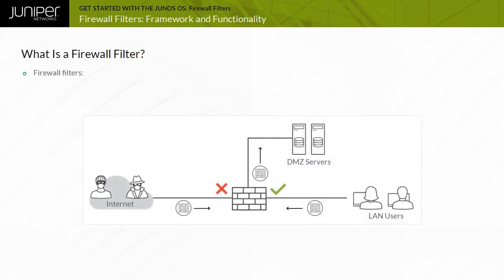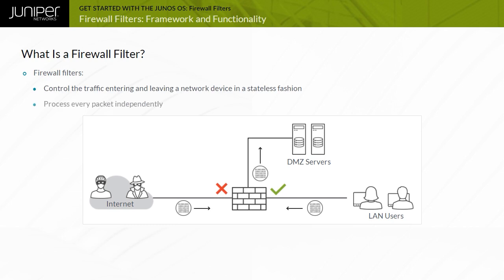Other vendors often refer to firewall filters as Access Control Lists or ACLs. Junos firewall filters are stateless, and the software primarily uses them to control traffic passing through a Junos device. Stateless firewall filters examine each packet individually.